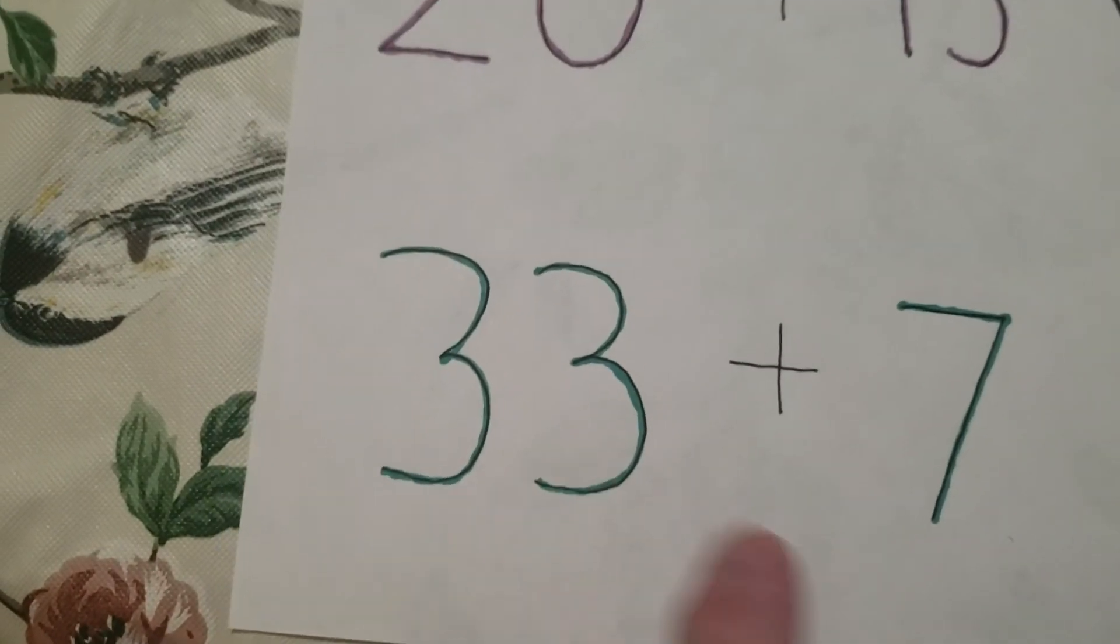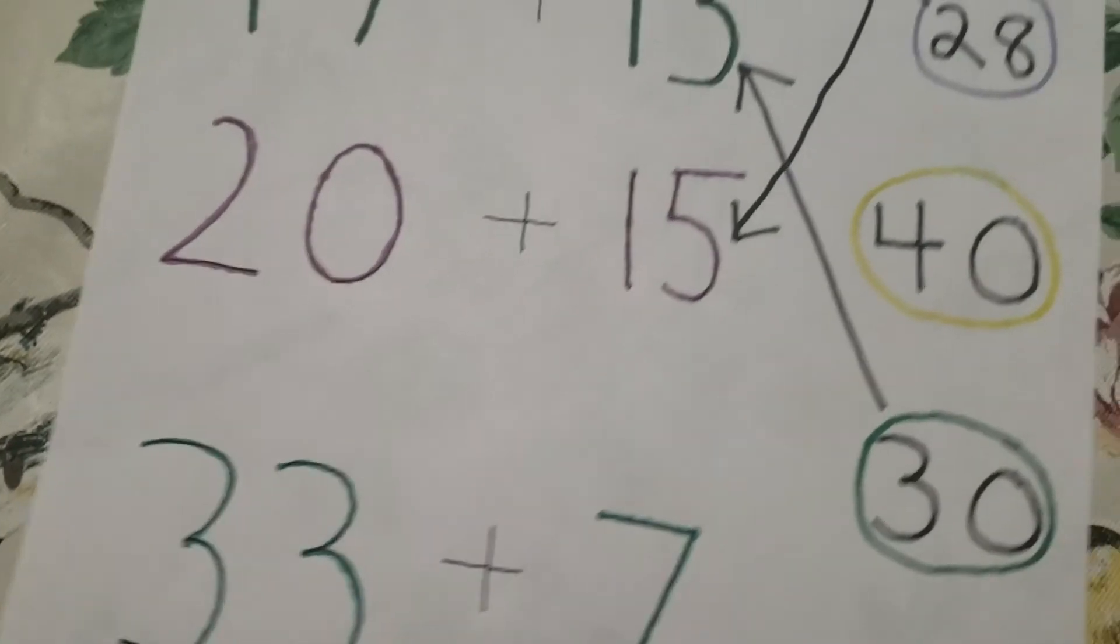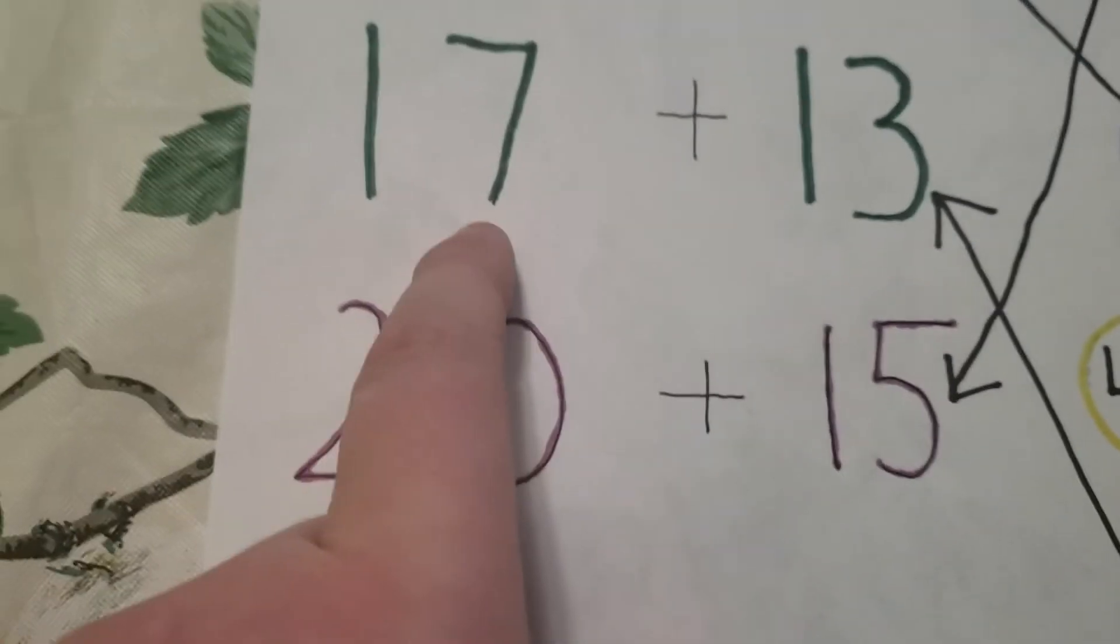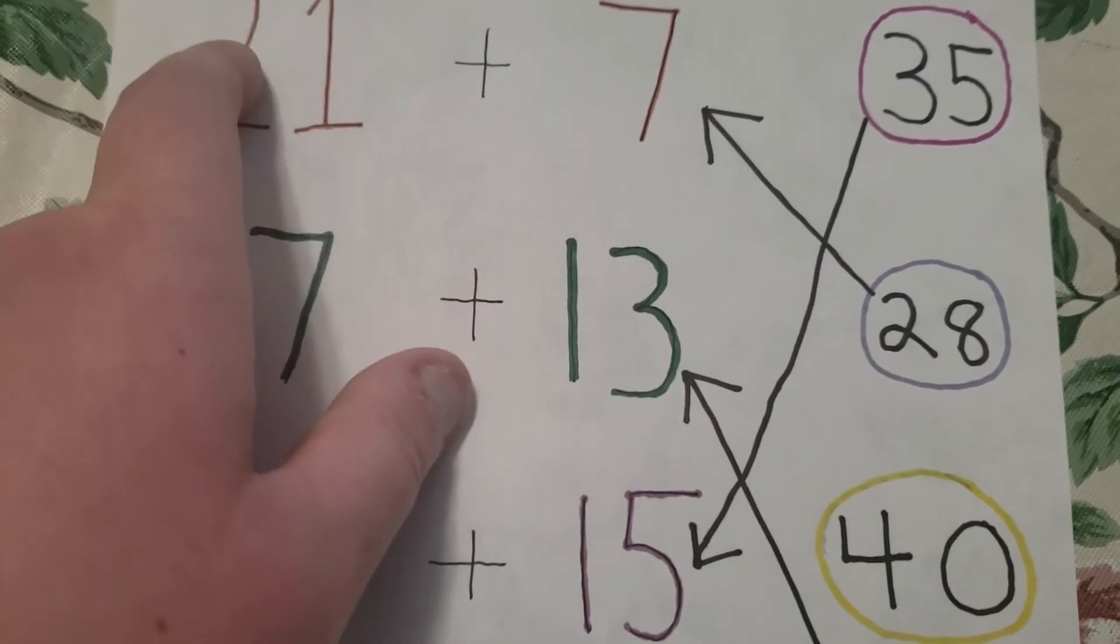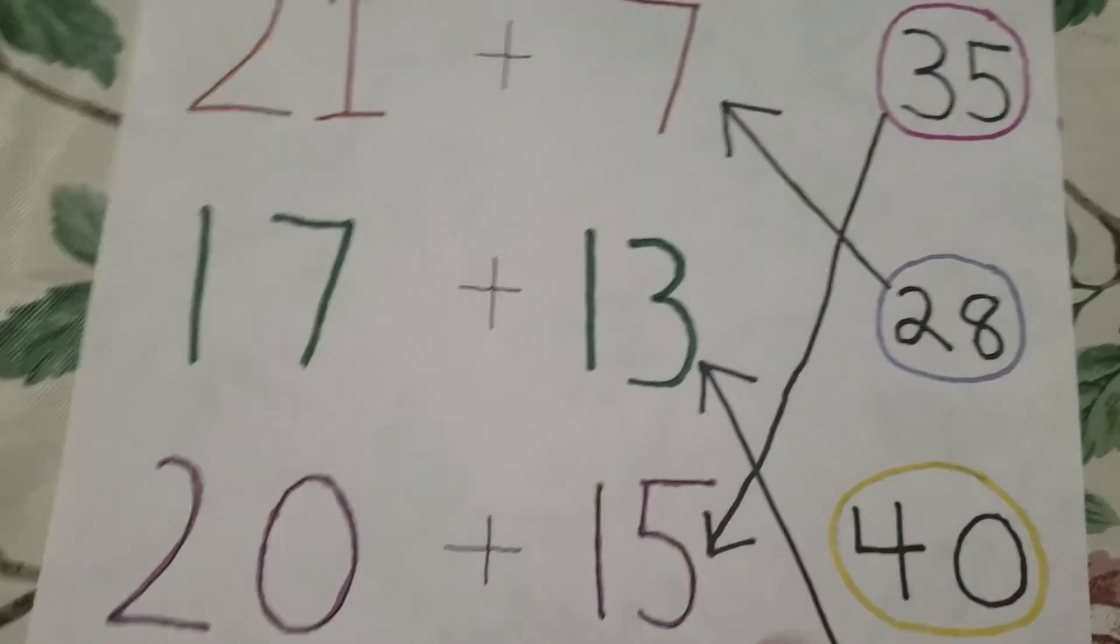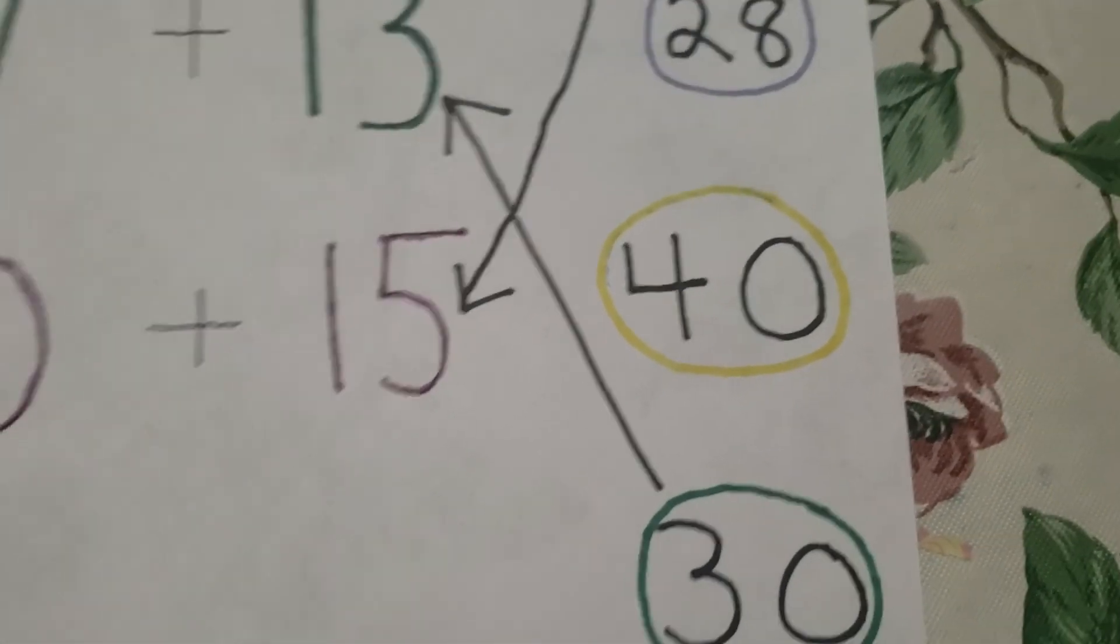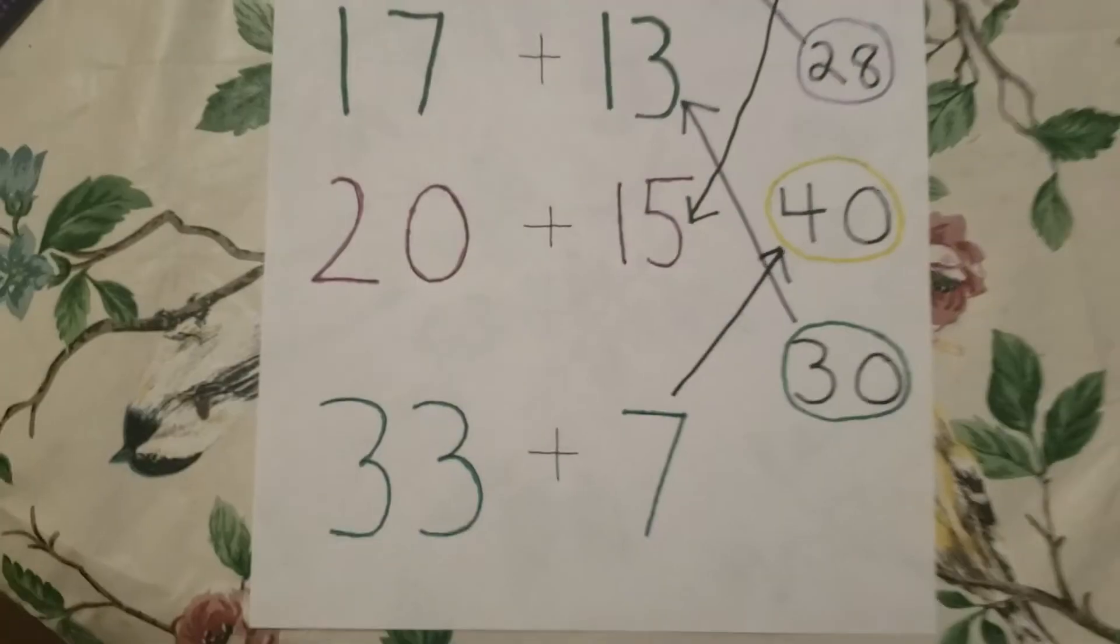Now, 33 plus 7. We only have one number left. We already did 30 because 30 equals 17 plus 13. 28, 21 plus 7. And 35, 20 plus 15. So the only thing we're left with is 40. That's kind of an easy one. But 33 plus 7 equals 40.